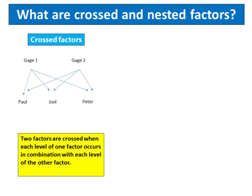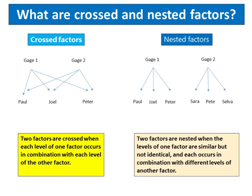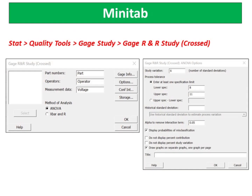What are crossed and nested factors? Two factors are crossed when each level of one factor occurs in combination with each level of the other factor. For example, if you use crossed factors in your study, the same 3 operators would inspect surface finish from both machines. Two factors are nested when the levels of one factor are similar but not identical, and each occurs in combination with different levels of another factor. Choose STAT > Quality Tools > Gauge Study > Gauge R and R Study (Crossed).